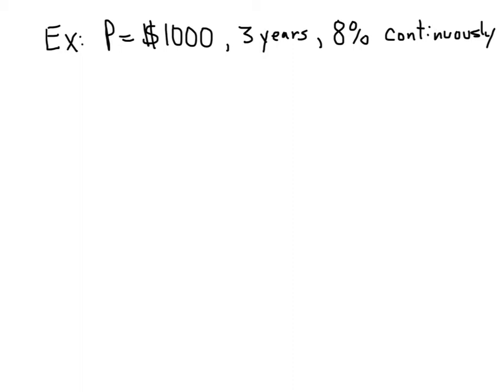So in this example, I'm going to invest $1,000 for three years. The nominal interest rate is 8%, and I'm going to compound it continuously. It's pretty easy to set that one up. I simply say A equals 1,000 times e raised to the 0.08 times 3.